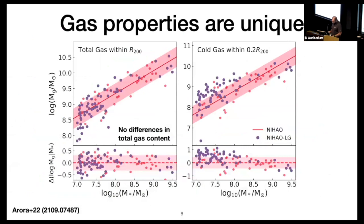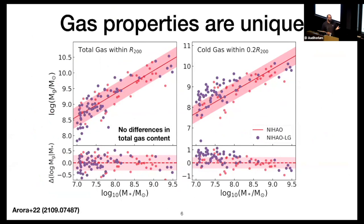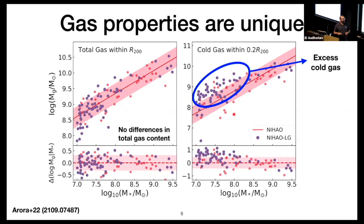The first question: are the local group gas properties unique? I'm showing stellar mass on the x-axis and gas mass on the y-axis. The left panel shows all gas within a dwarf halo; the right panel shows just the cold gas in the central part. When we look at the total gas distribution, Ni Hao LG dwarfs are very similar to field systems. However, when we move to just the cold gas, we find an excess of cold gas in the smallest dwarf galaxies. Two possible reasons: these small dwarfs came by the Milky Way and picked up some gas, or they went through supernova feedback and a galactic fountain effect produced some excess cold gas.